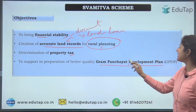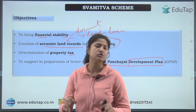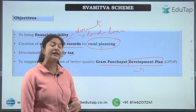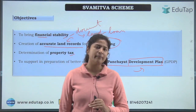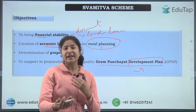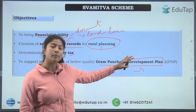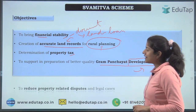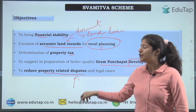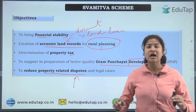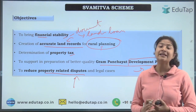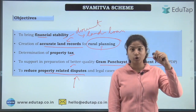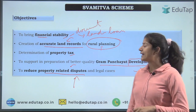Fourth, to support the preparation of better quality Gram Panchayat development plans — with proper categorization of land, developmental programs and infrastructure can be planned effectively. Even if the government doesn't have sufficient land in an area, they can trade land with locals, but for that they need proper documentation. Fifth, to reduce property-related disputes — once proper documentation and verification of land is done, there will be fewer land disputes since people will have documented proof of land ownership.